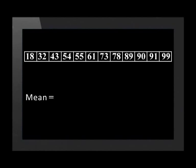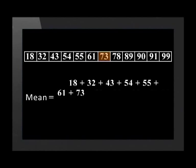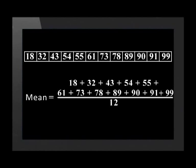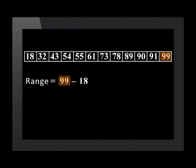Let's revise finding the mean and range using the same data. To find the mean or average, we add up all the values and divide by the number of pieces of data: (18 + 32 + 43 + 54 + 55 + 61 + 73 + 78 + 89 + 90 + 91 + 99) ÷ 12. The mean equals 65.25. The range equals 99 − 18 = 81. There is no mode as each result only occurs once.